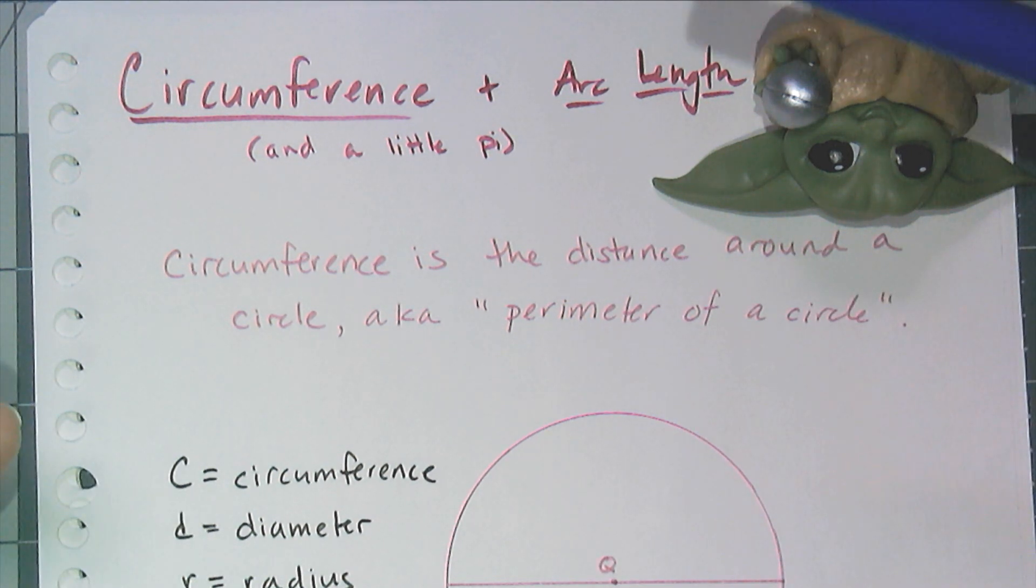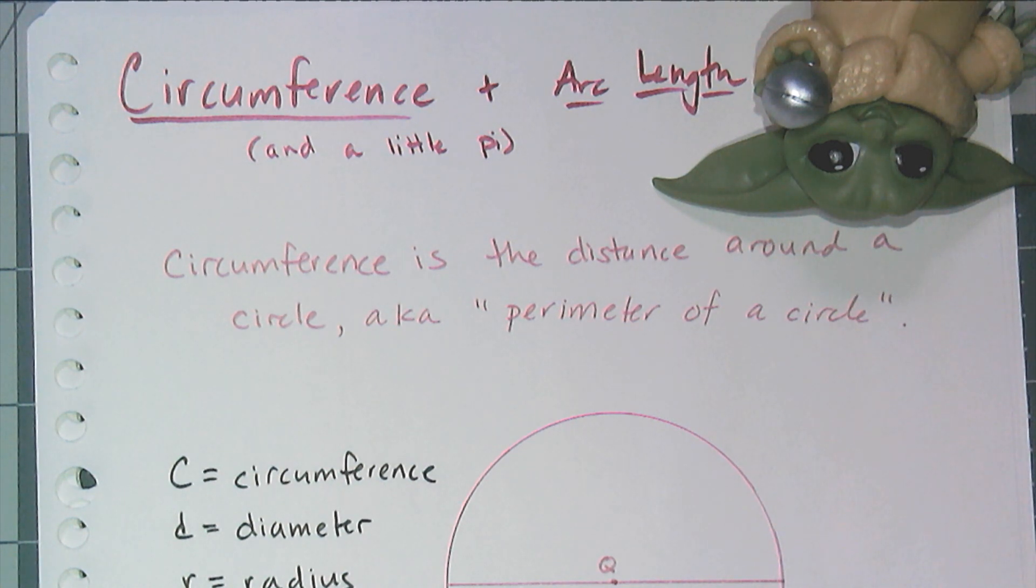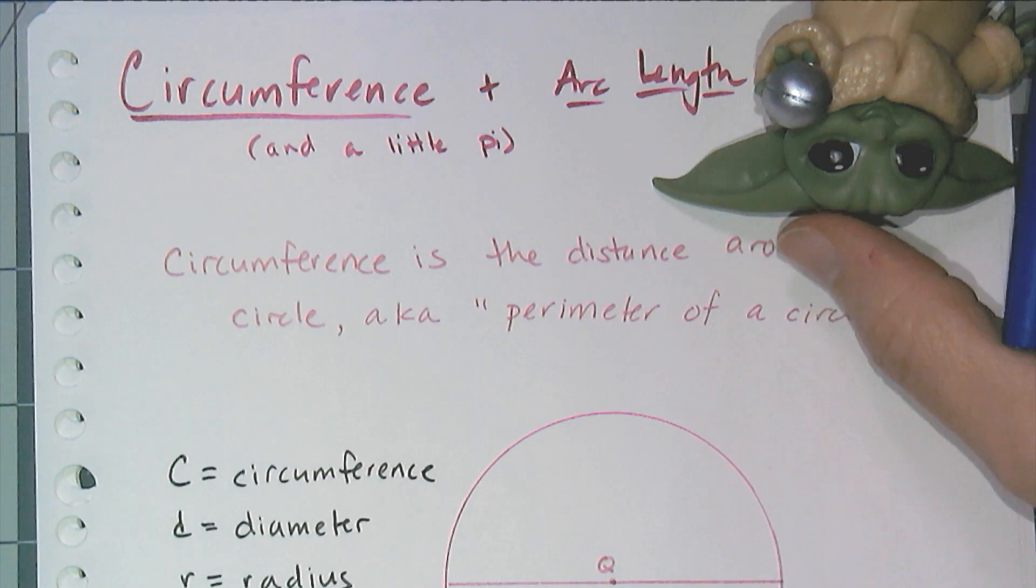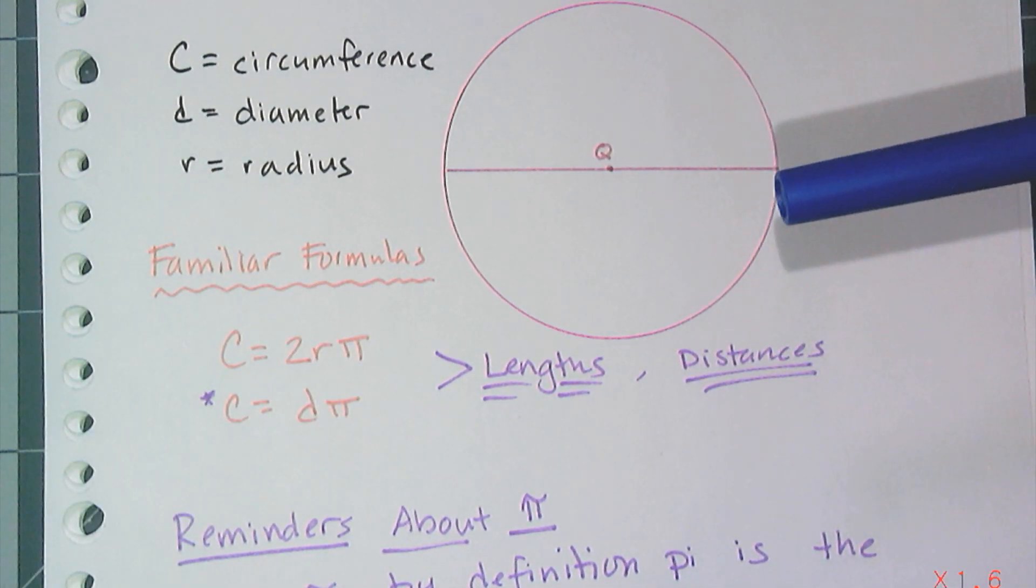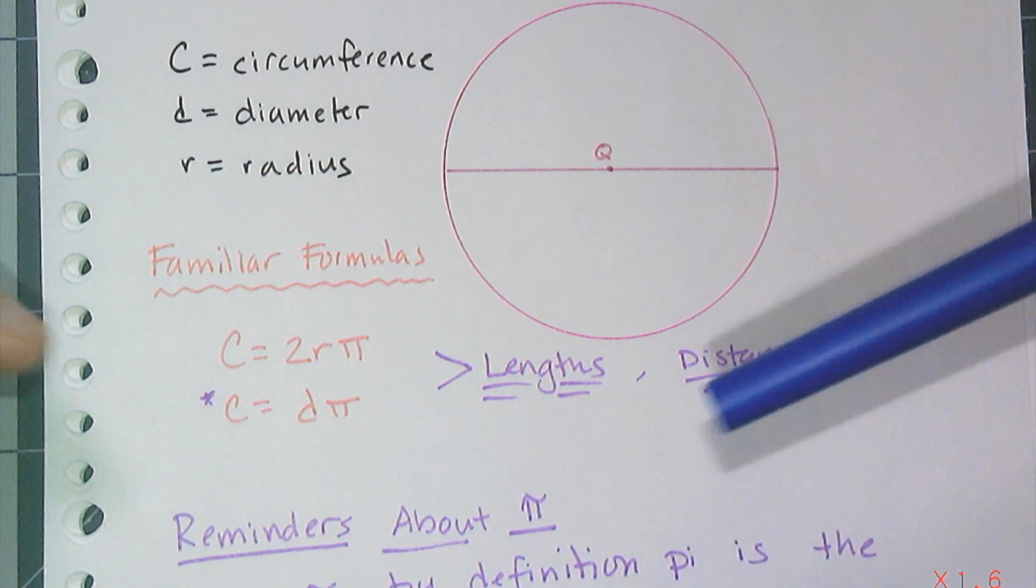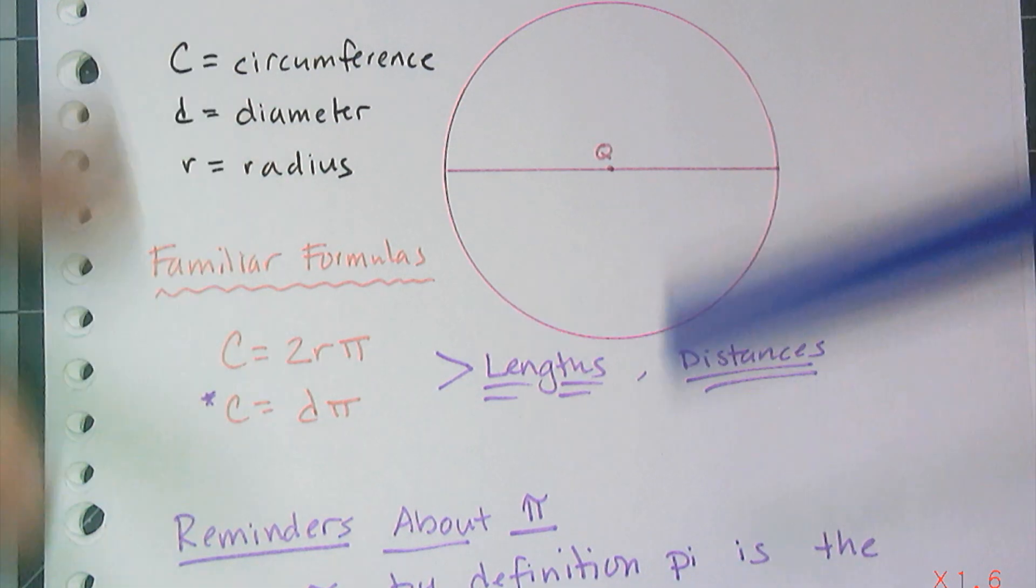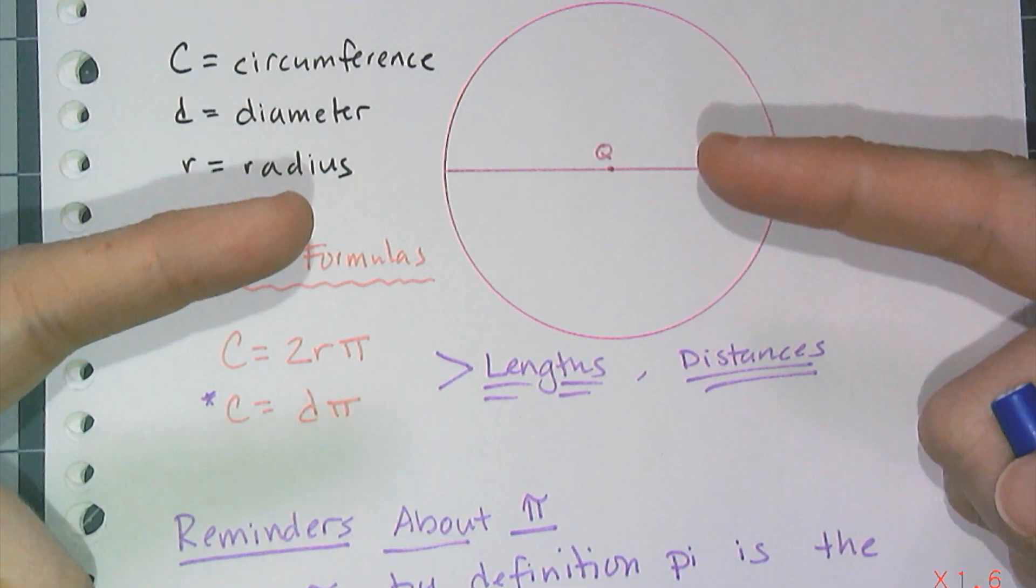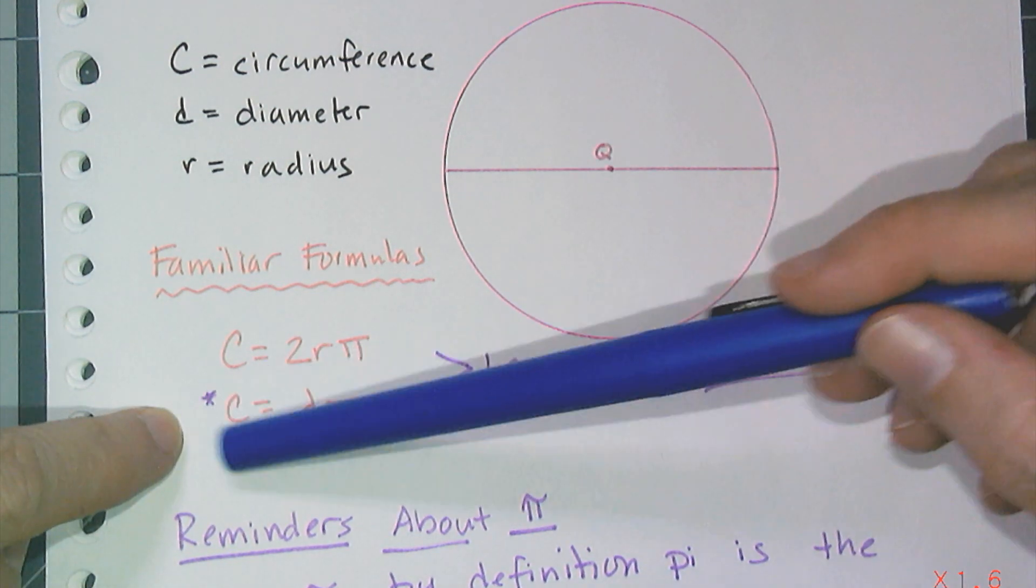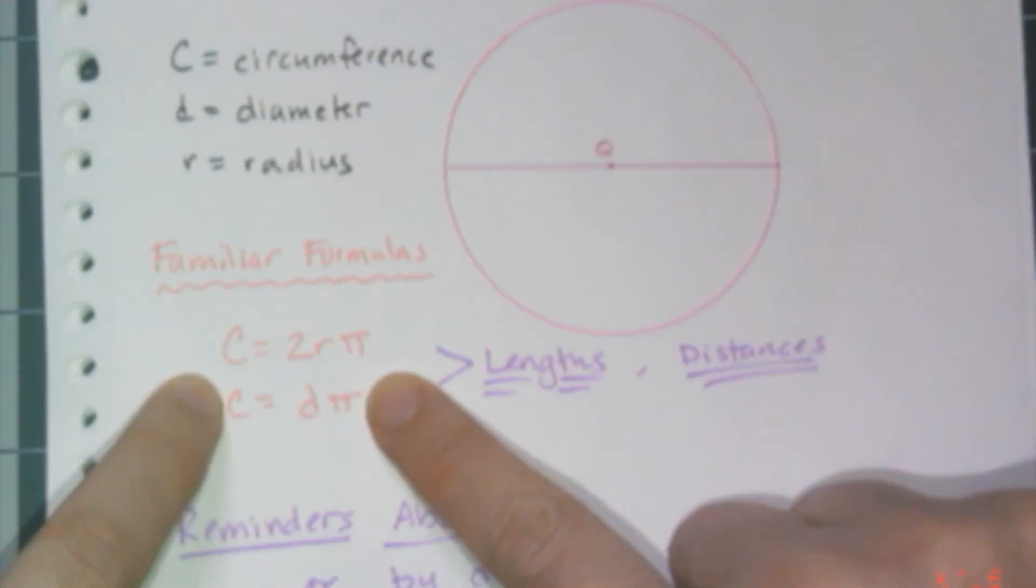But really, fundamentally and most importantly, circumference is the distance around a circle. It's what we think of as the perimeter of the circle. And yes, there are two formulas often used to find circumference: C equals 2rπ and C equals dπ. Remember these are lengths and distances, so put appropriate units please. I put a little asterisk around this one because this is the fundamental relationship—this kind of started it all.